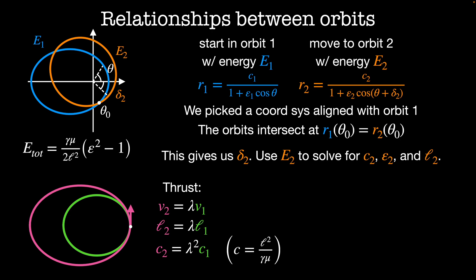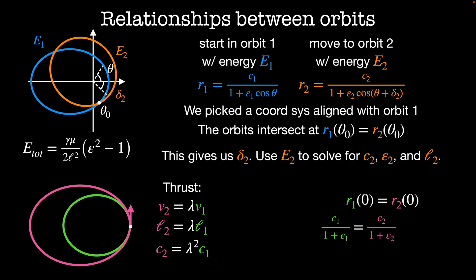In this particular case, I applied a thrust at theta equals zero. That means the radius of the first orbit at theta equals zero equals the radius of the second orbit at the same theta. So R1 at theta equals zero is C1 divided by 1 plus epsilon1, which equals C2 divided by 1 plus epsilon2. Using C2 equals lambda squared times C1, the right-hand side becomes lambda squared times C1 divided by 1 plus epsilon2. The C1s cancel, giving a relationship between epsilon2 and epsilon1. The eccentricity of the second orbit, epsilon2, is equal to lambda squared times the quantity epsilon1 plus 1, minus 1.